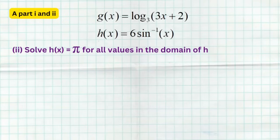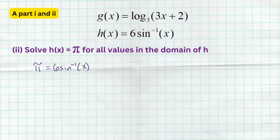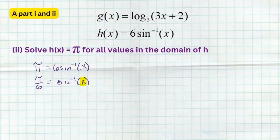In part two, we're asked to solve the second function h(x) = 6 sin⁻¹(x) = π for all values of the domain of h. First, divide both sides by 6 to get π/6 = sin⁻¹(x). Now, remember: sine inverse takes an input which is a y-coordinate from the unit circle, and the output π/6 is the angle where that y-coordinate occurs. So at π/6, our y-coordinate is 1/2. Therefore x = 1/2.